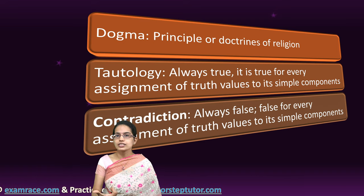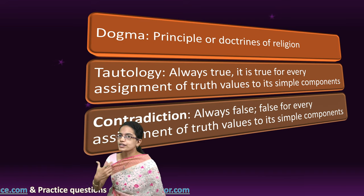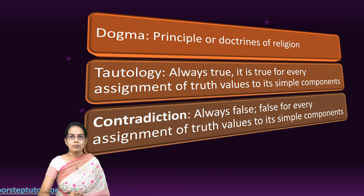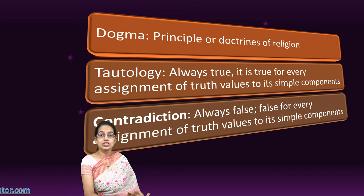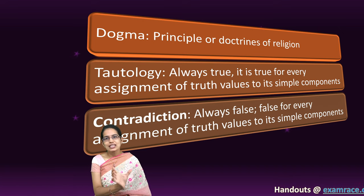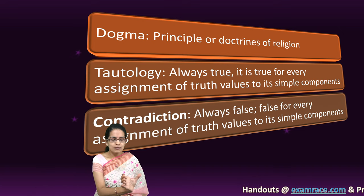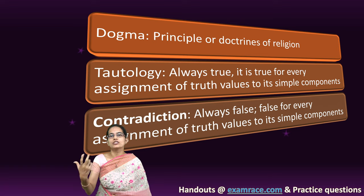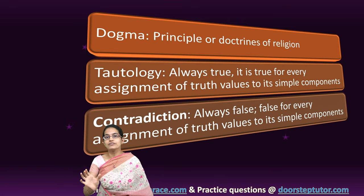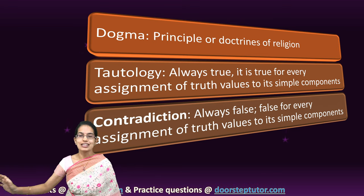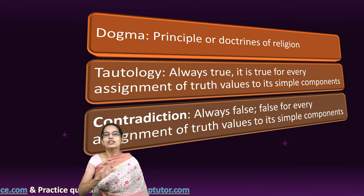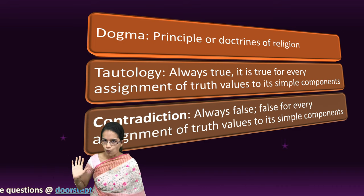The next is contradiction. Contradiction is always false. When I say I love studying and I do not love studying, this is a contradiction — it is always false. This cannot be true. When I say I love studying and I do not love studying together, this cannot be a correct version. So this is always false.